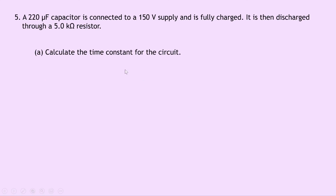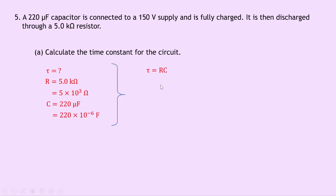Question 5: a 220 microfarad capacitor is connected to a 150 volt supply and fully charged, then discharged through a 5.0 kilohm resistor. Part A asks to calculate the time constant. R = 5 × 10³ Ω, C = 220 × 10⁻⁶ F. Using τ = RC: 5 × 10³ × 220 × 10⁻⁶ gives a final answer of 1.1 seconds.